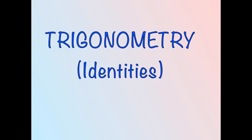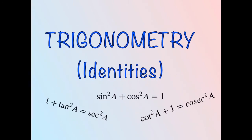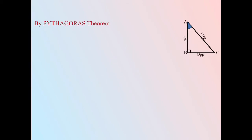Namaste. In this video we will see trigonometric identities, that is square relations between trigonometric ratios. Let us say we have a right-angled triangle ABC. By applying Pythagoras theorem in this triangle we have AB² + BC² = AC². To find the ratio of the sides in this equation, we will divide this equation by each of the three sides one by one.